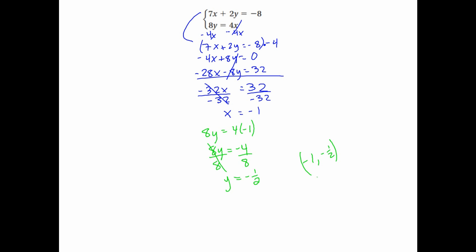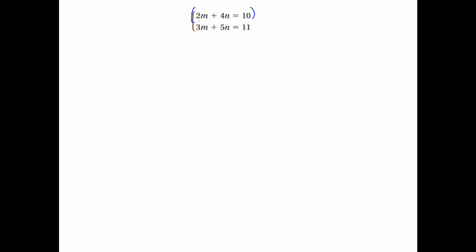Alright, we've got a couple more. Let's look at this problem. If I wanted to cancel out my m's here, those don't fit really nicely, so I have to multiply. 6 is the common multiple, so I can multiply the first equation by 3 and the second by negative 2 to make them opposite. In the first one I get 6m plus 3 times 4 giving 12n, equals 3 times 10 which is 30. In the second, negative 2 times 3m is negative 6m, negative 2 times 5 is negative 10n, and negative 2 times 11 is negative 22.